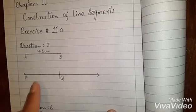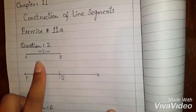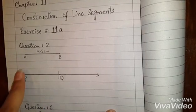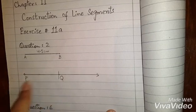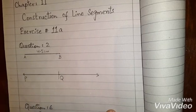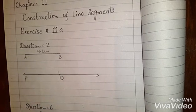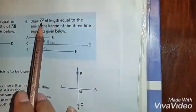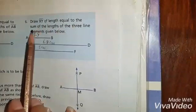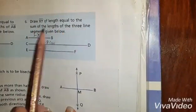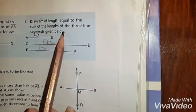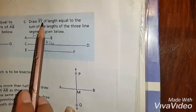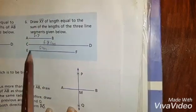We have drawn line PQ of length 4.5 cm — that is the question answered. Now question number 6: draw XY of length equal to the sum of the lengths of the 3 line segments given below. We have to draw line XY whose length equals the sum of those 3 line segments.